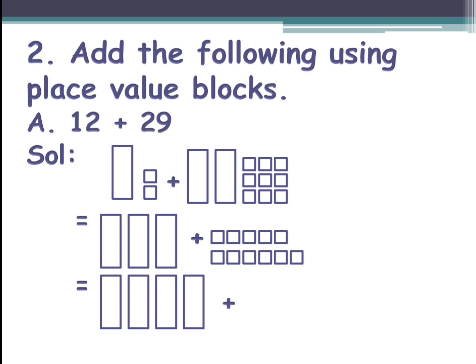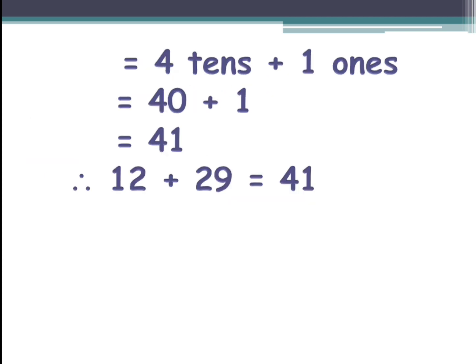You'll place plus and then you will write one small square. From this we can say there are four tens and one ones, which becomes four tens becomes 40 and one ones become 1. 40 plus 1 becomes 41. Therefore, 12 plus 29 is equal to 41.